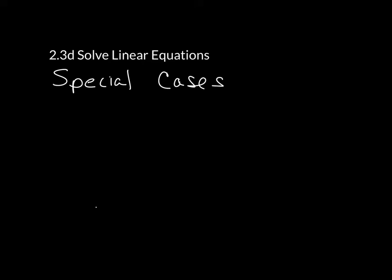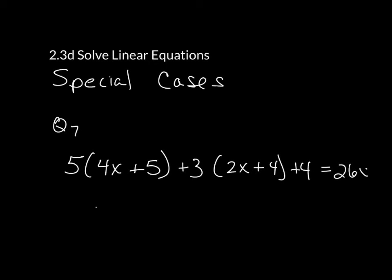So let's look at one of the first examples. You'll have a question similar to question 7, and it will look like 5 times 4x plus 5 plus 3 times 2x plus 4 plus 4 is equal to 26x plus 41.